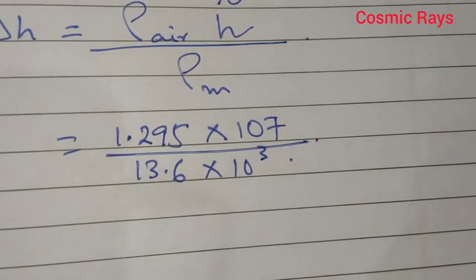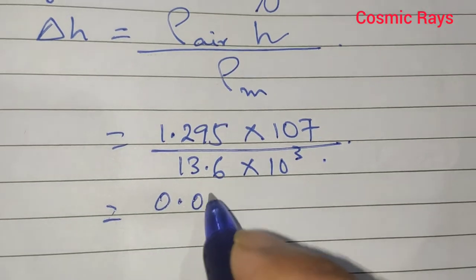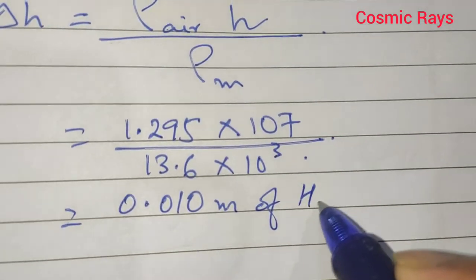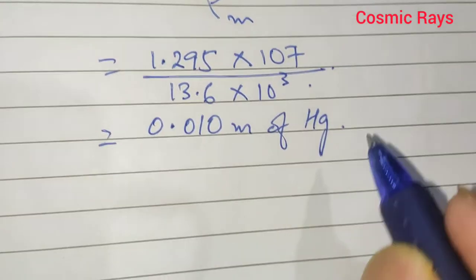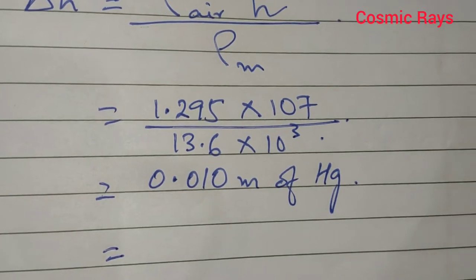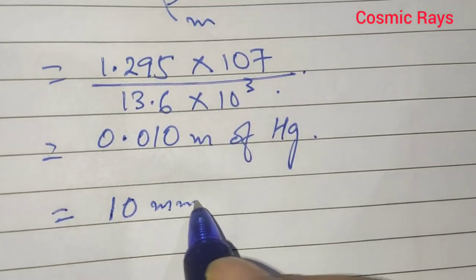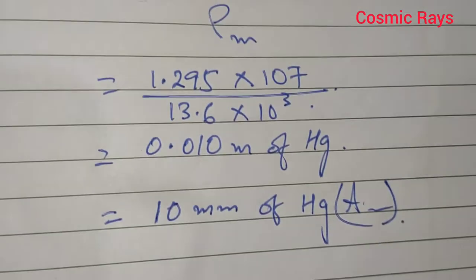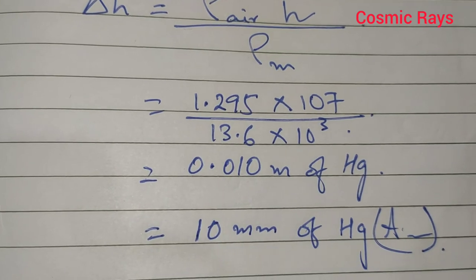Solving, we get 0.010 meter of Hg. Since the units were in meters, to convert to millimeter we multiply by 1000, giving 10 millimeter of Hg. That is the answer. That's all in this AV. Practice properly. Thank you so much. God bless.